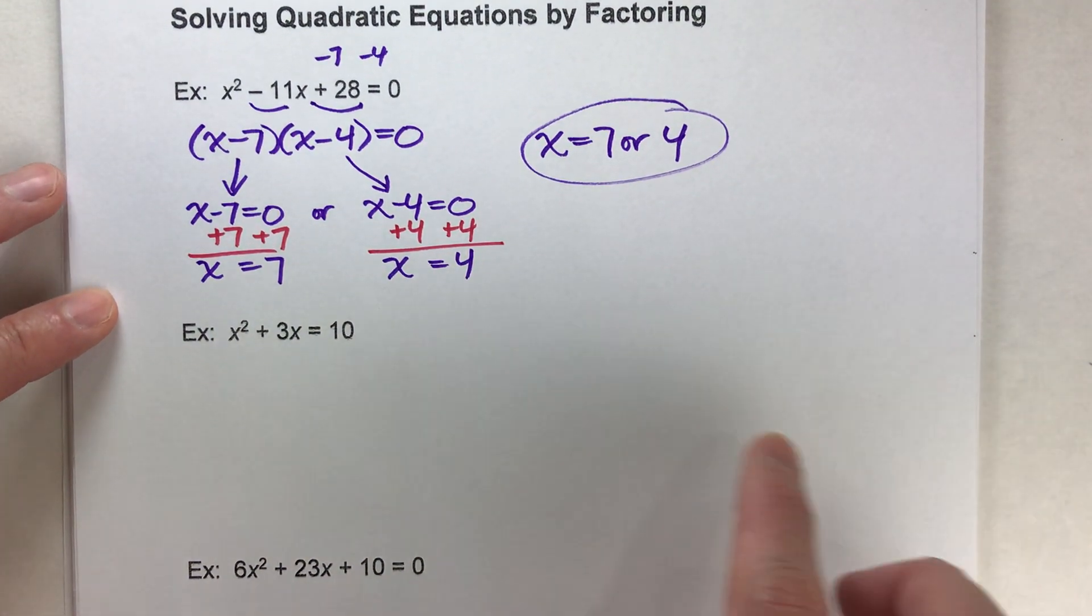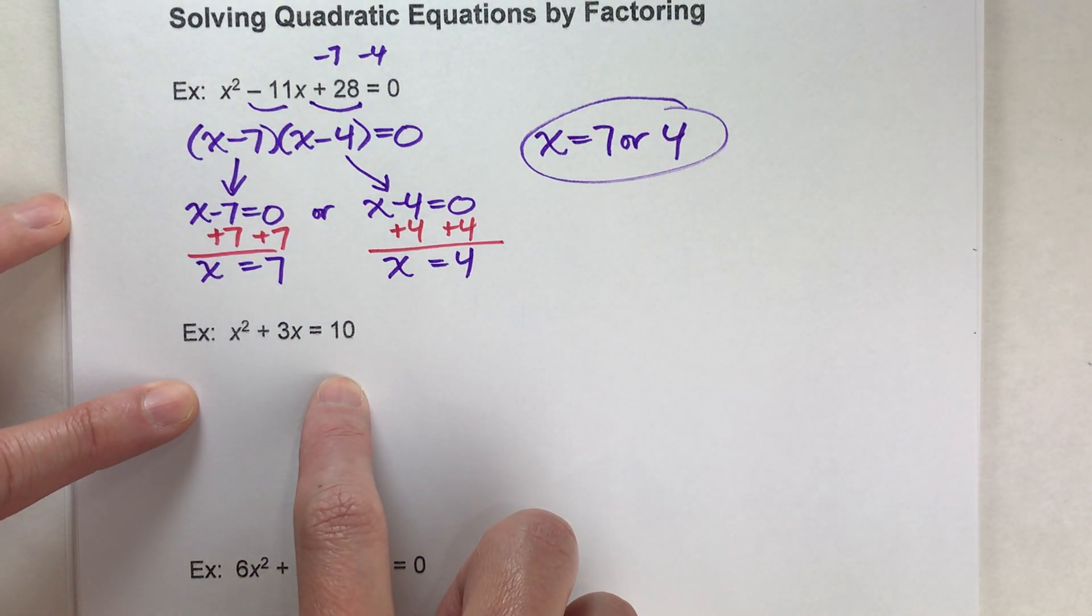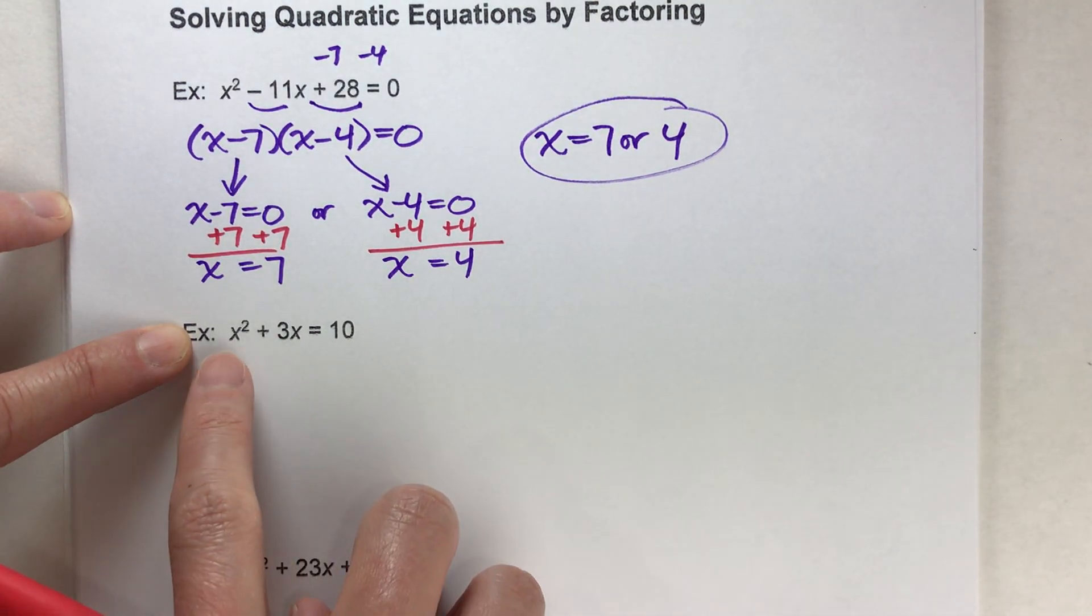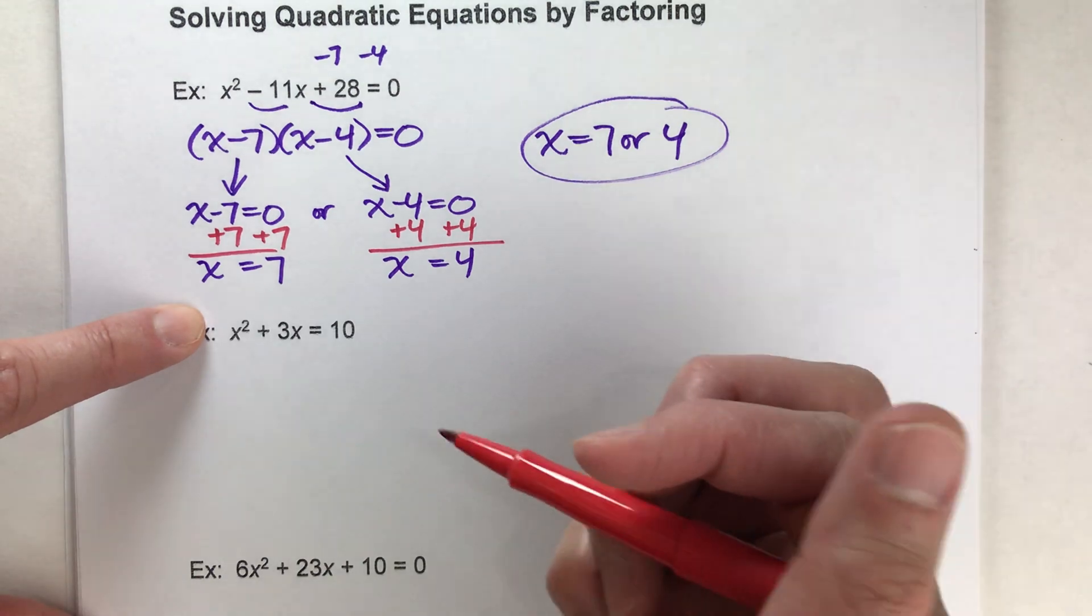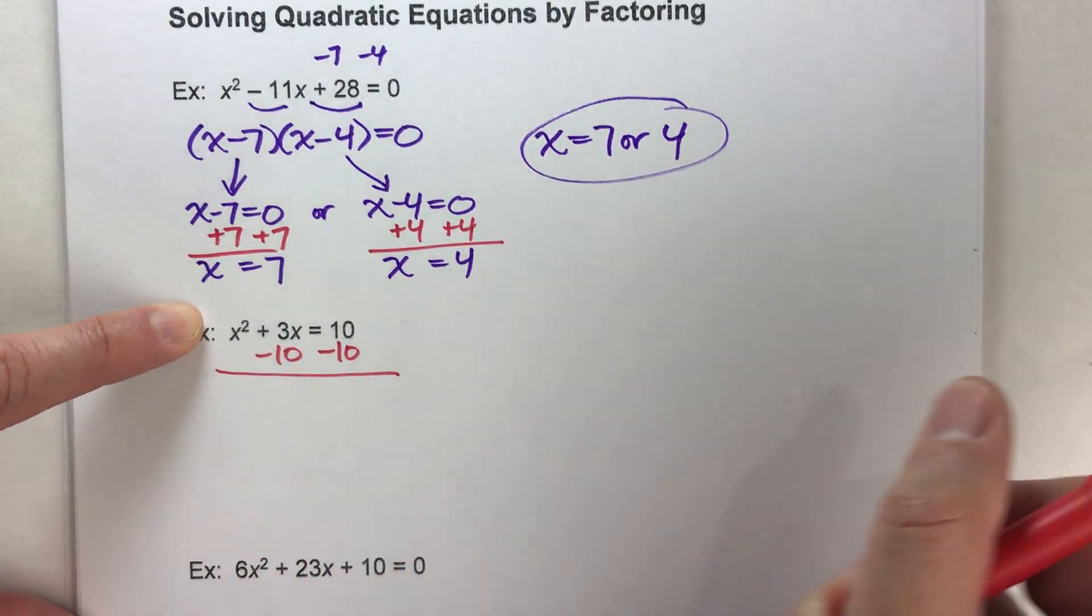Let's do another example. We've got x squared plus 3x equals 10. Remember our first step is to get all the terms on one side of the equal sign and have it equal to 0. In this case we're going to do a little work here. We need to subtract off this 10 off the right side so we get 0.